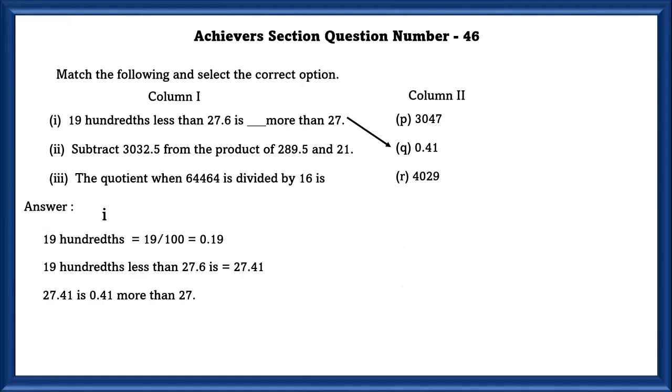Second one, subtract 3032.5 from the product of 289.5 and 21. The product of these two numbers subtracted from 3032.5 is the P option.